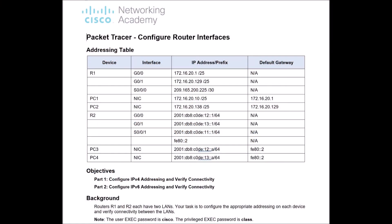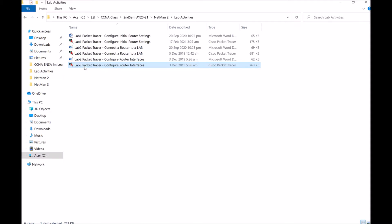Good day, it's again time for another Packet Tracer activity. We will be doing activity number 1.4.7 entitled Configure Router Interfaces under the CCNA v7 Switching, Routing and Wireless Essentials or SRWe course. Let us now open our Packet Tracer file.